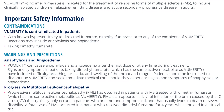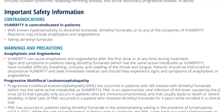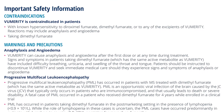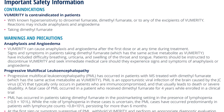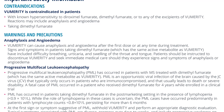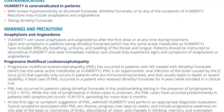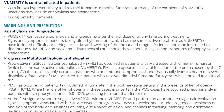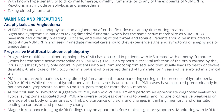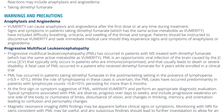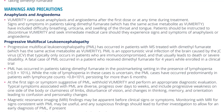Progressive Multifocal Leukoencephalopathy, PML, has occurred in patients with MS treated with dimethyl fumarate, which has the same active metabolite as Vumerity. PML is an opportunistic viral infection of the brain caused by the JC virus, JCV, that typically only occurs in patients who are immunocompromised and usually leads to death or severe disability. A fatal case of PML occurred in a patient who received dimethyl fumarate for four years while enrolled in a clinical trial. PML has occurred in the post-marketing setting in the presence of lymphopenia less than 0.9 × 10⁹ per liter, predominantly in patients with lymphocyte counts less than 0.8 × 10⁹ per liter persisting for more than six months.